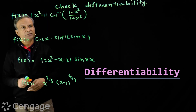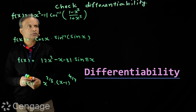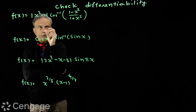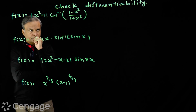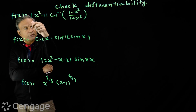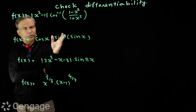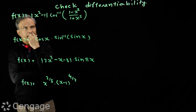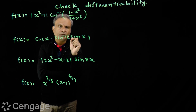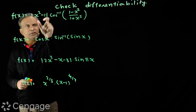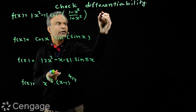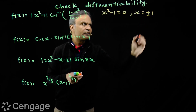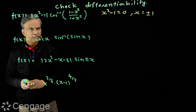The first function is: modulus of (x²-1) multiplied by cos⁻¹((1-x²)/(1+x²)). This is a product of two functions. Modulus of (x²-1) is continuous everywhere in its domain, and the domain is the set of real numbers. It is non-differentiable at x = ±1, since that is where x²-1 equals zero.